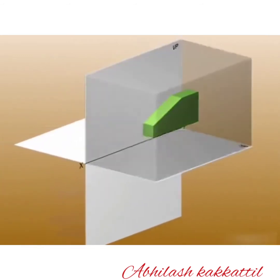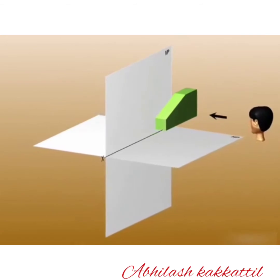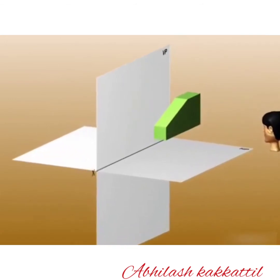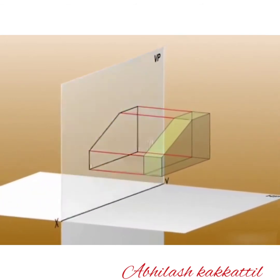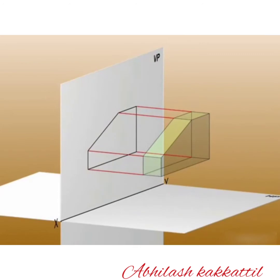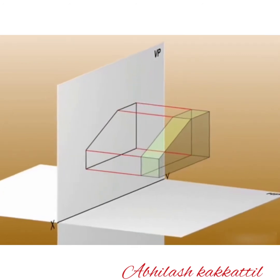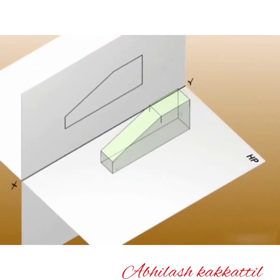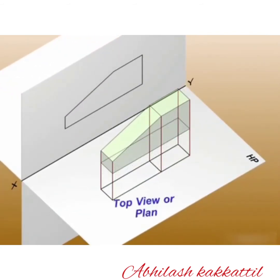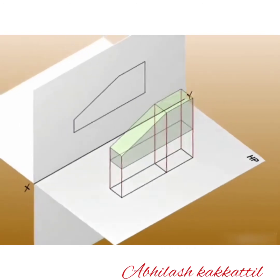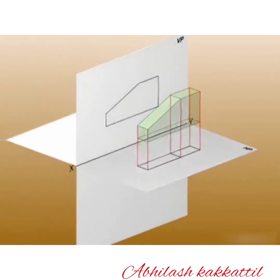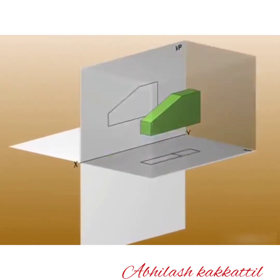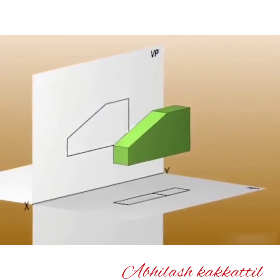Now we consider the object placed in the first quadrant. Looking at the front side, the image formed on the VP is known as the front view or elevation. Then looking at the top, the image formed on the HP is known as the top view or plan. Since the object is in the first quadrant, the projection obtained is called first angle projection.